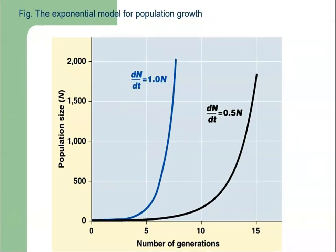In this graph, we have two types of exponential model of population growth. If r equals 1, the size of the population will grow steeply. If the growth rate is 0.5 instead of 1, the rate of change of population with respect to time will grow more gradually. These are two examples of exponential growth of population.